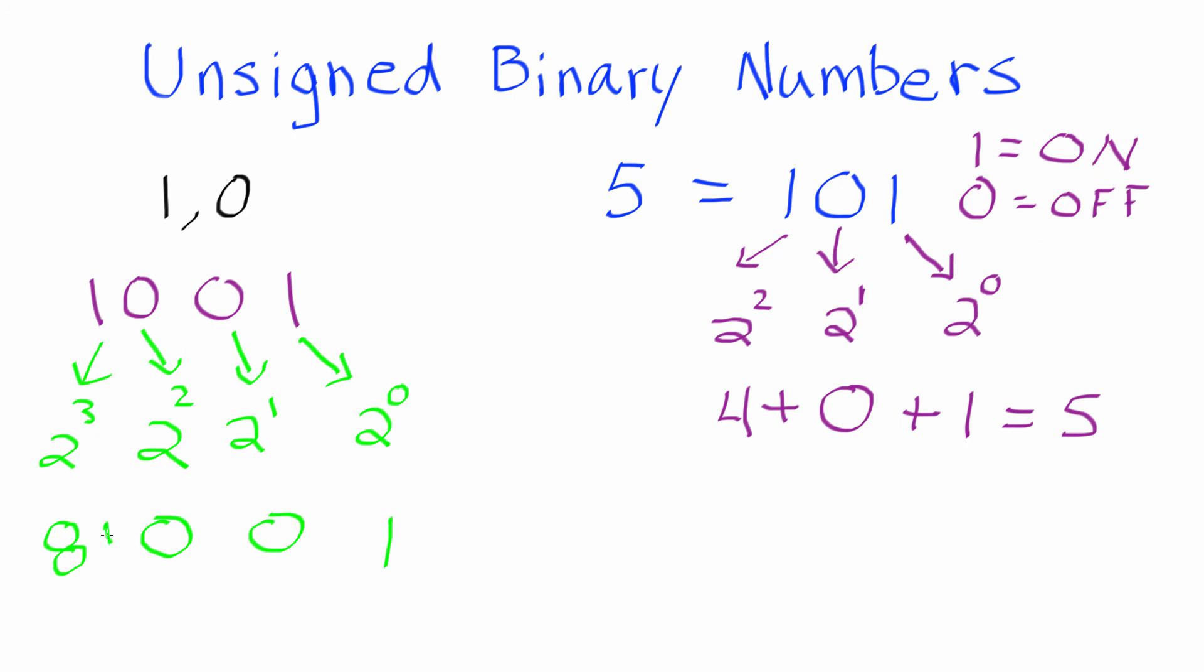So 8 plus 0 plus 0 plus 1 is equal to 9. So if we wanted to represent the number 9 in unsigned binary notation, we simply write 1, 0, 0, 1.